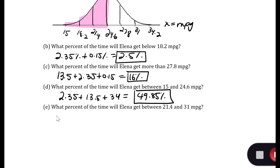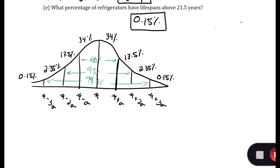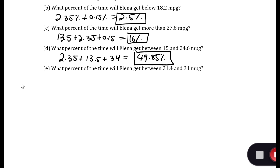Lastly, what percentage of the time will Elena get between 21.4 and 31 miles per gallon? That's from one standard deviation below to two standard deviations above the mean. So that's 34 plus 34 plus 13.5, which is 81.5%.